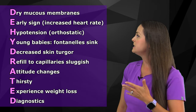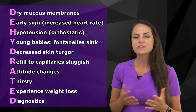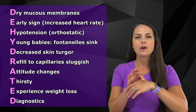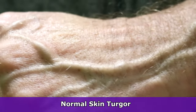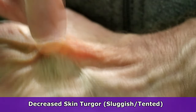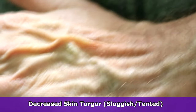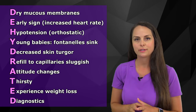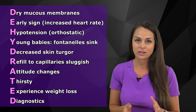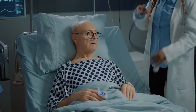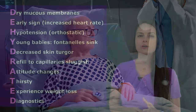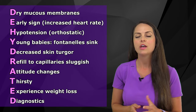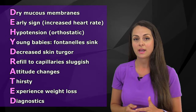D is for decreased skin turgor — skin elasticity. When checking, instead of bouncing back quickly, the skin will tent and be very sluggish. Note that in older geriatric patients, skin elasticity naturally decreases with age, so this isn't a reliable dehydration indicator for that population. Check other signs and symptoms in those patients instead.